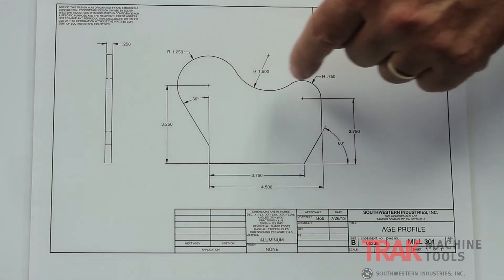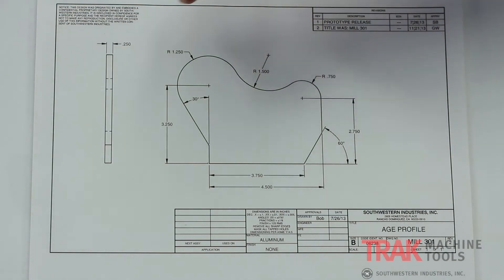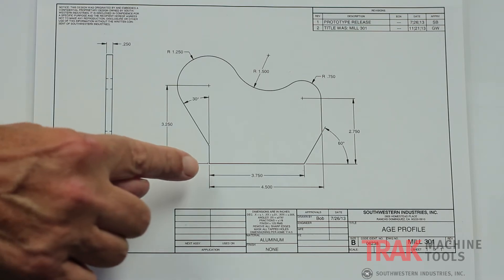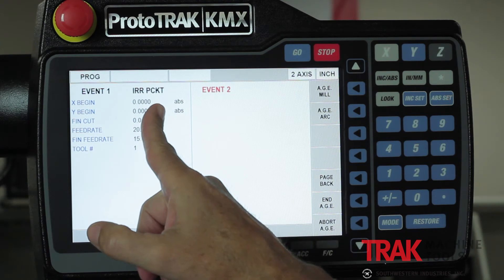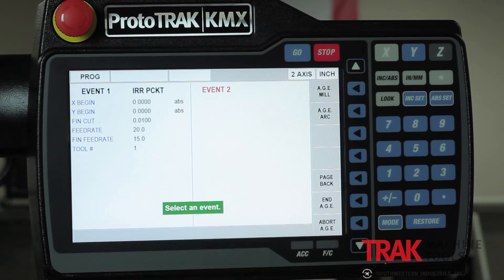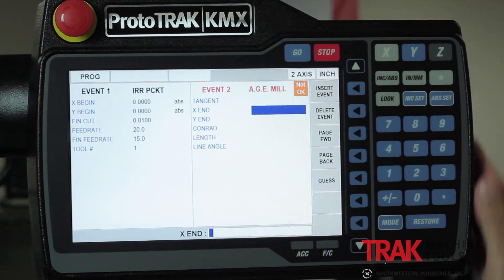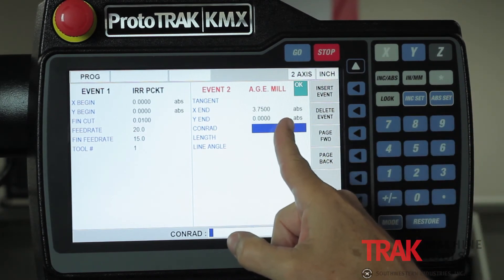Let's assume this is a pocket. On this pocket, there's no Y dimension. The tangency points here, here, and here are all missing. The Y dimension right here is also missing. I'm going to show you how to make this into a pocket and how the control itself can do all of the geometry for you as you go, without ever having to stop and find another dimension. We're calling this portion zero, zero. I've got my zero, zero already programmed in, I'm in an irregular pocket with my feeds, speeds, and finish cuts set. So I'm going to start out going in this direction, select mill. X ends at 3.75 inches and zero. I've got an okay here already, so I page forward.